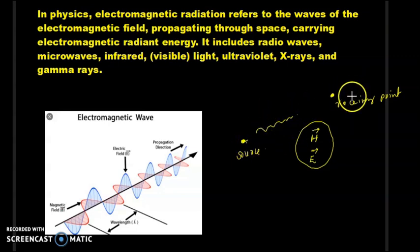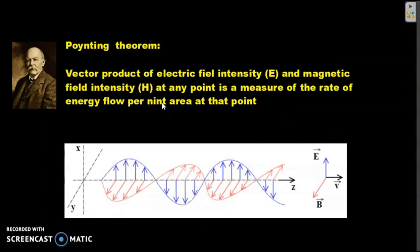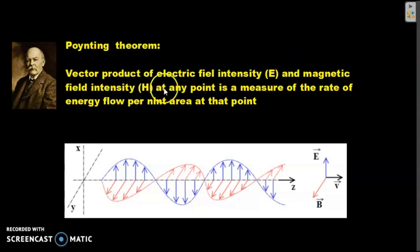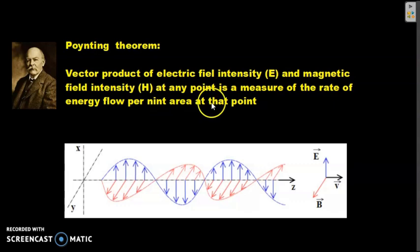This wave is propagating through space at the velocity of light, C. John Henry Poynting, an English professor, proposed a theorem for the conservation of energy of the electromagnetic field. The theorem states that the vector product of the electric field intensity E and magnetic field intensity H at any point is a measure of the rate of energy flow per unit area at that point.